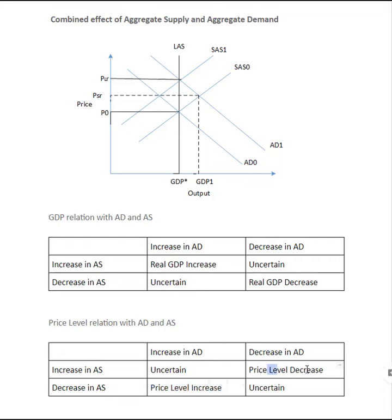When both aggregate supply and aggregate demand increase together, or when they both decrease, the magnitude of each change determines whether the price level will ultimately increase or decrease.